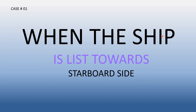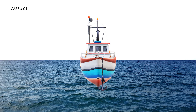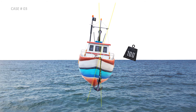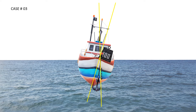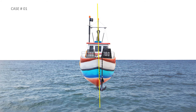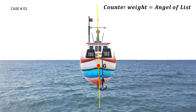Let's discuss case number one: when the ship is listed towards the starboard side. Here, suppose this is the center of gravity, and an extra weight is placed on the ship due to which the ship is listed to some angle, like 3 degrees, and its center of gravity is shifted towards the direction of that weight. To reduce this list, we have to add a counterweight on the opposite side. When we add the counterweight, we will correct the list and its center of gravity will come back to its original position.